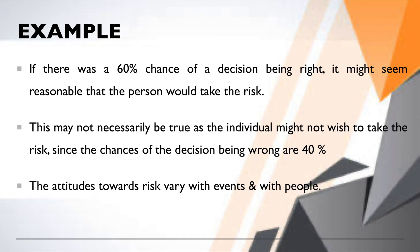Attitudes toward risk vary with events and with people. You can also categorize risk tolerance by age or earnings: a retired person with a pension and lifelong savings might be willing to take higher risk because they have a financial backup. But a 25-year-old just starting their career with zero savings and no pension would take lesser risk, having no backup if they lose their money.